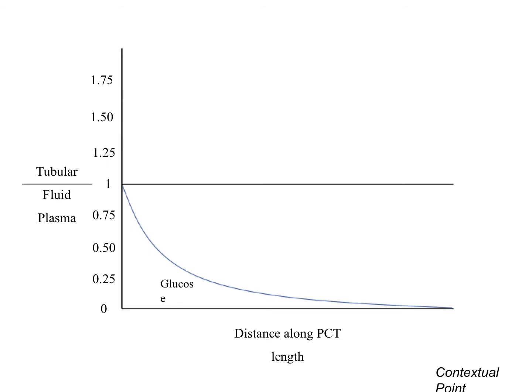First, we are looking at glucose. As we know, we are reabsorbing all glucose in the proximal convoluted tubule. This is physiologic. If we are not reabsorbing glucose — as in diabetic patients — this is pathologic.